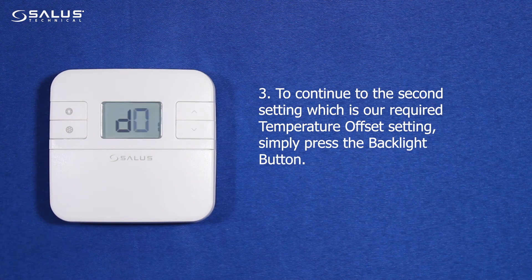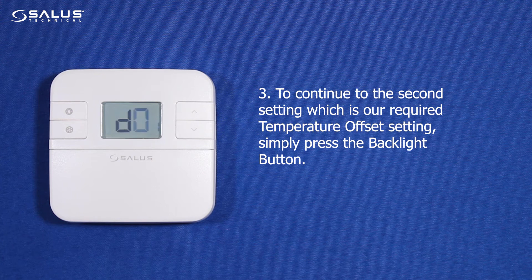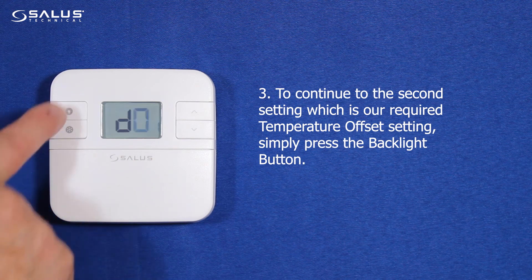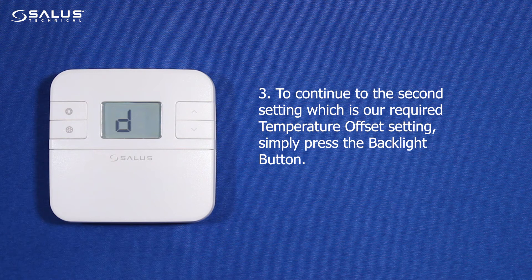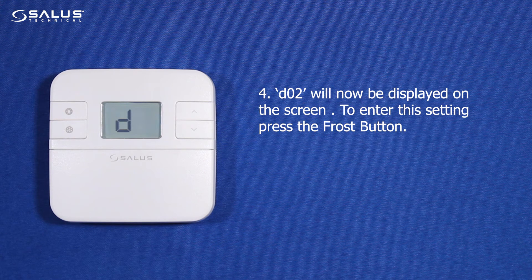Step 3: To continue to the second setting, which is our required temperature offset setting, simply press the backlight button. Step 4: D02 will now be displayed on the screen. To enter this setting, press the frost button.